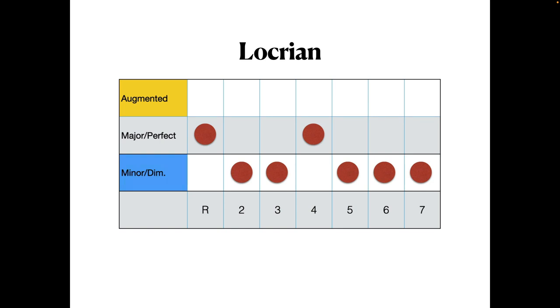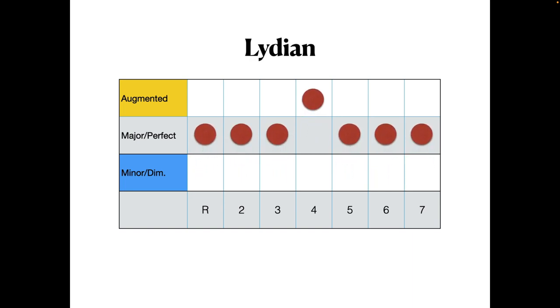And if we drop that from Locrian, we do in fact get the Lydian pattern again, from which the cycle can continue.